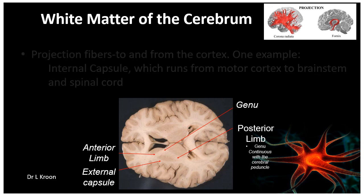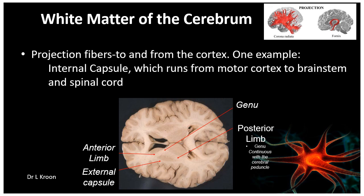Shown here are the projection fibers, which travel to and from the cortex. The best example would be the internal capsule, which runs from the motor cortex to the brainstem and the spinal cord. It is shown here in this axial section of the brain, showing the anterior limb, the genu, as well as the posterior limb, which continues down to the cerebral peduncles.